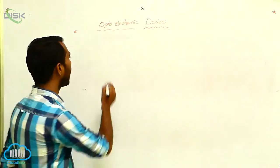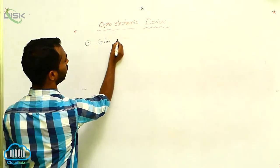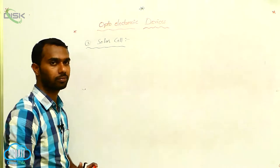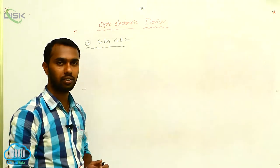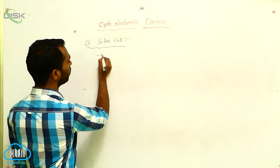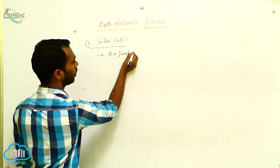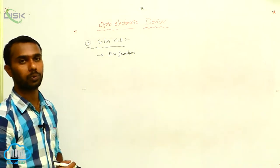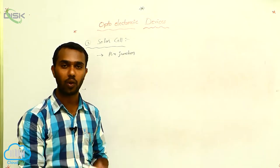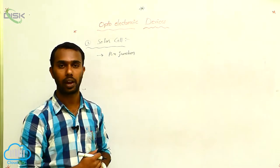Another optoelectronic device is a solar cell. It is a PN junction diode — all these are applications of PN junction diode. The solar cell converts light energy into electrical energy.